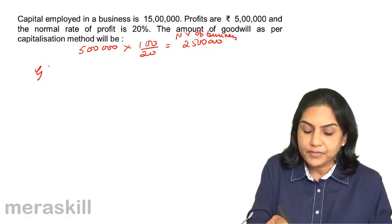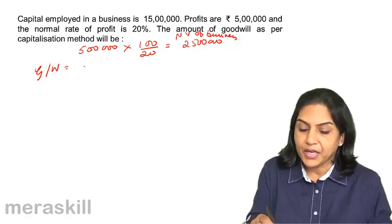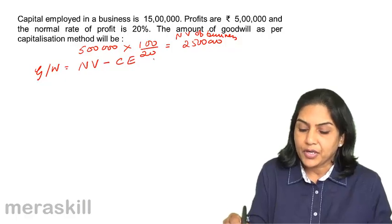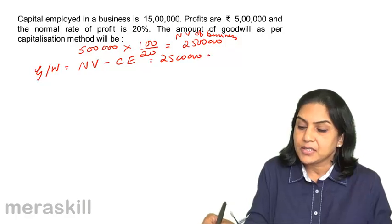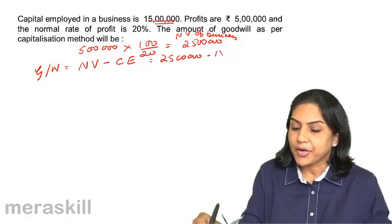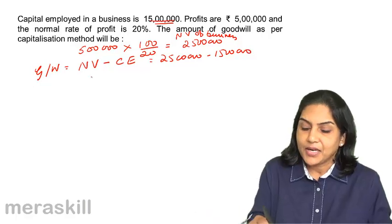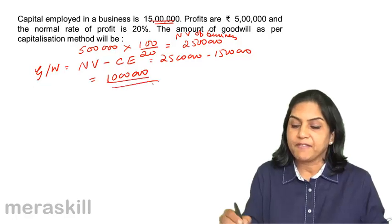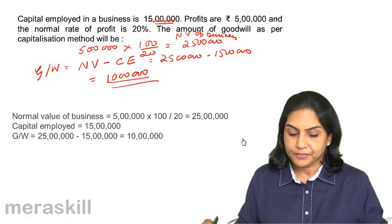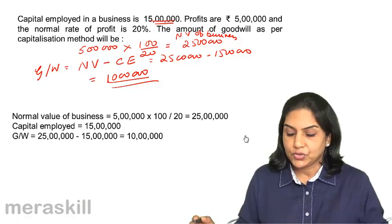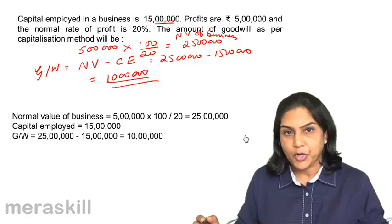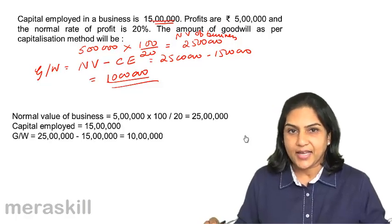What is goodwill? Goodwill will be equal to normal value of business minus capital employed — that is 25 lakhs minus 15 lakhs, which is 10 lakhs. Therefore, 10 lakhs would be the value of goodwill. Normal value is 25 lakhs, capital employed is 15 lakhs, therefore goodwill is 10 lakhs.